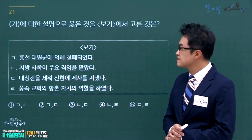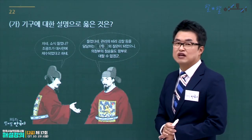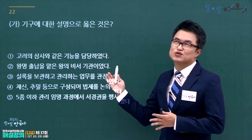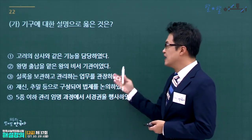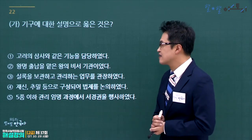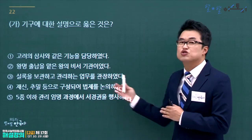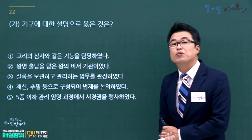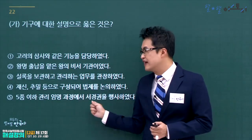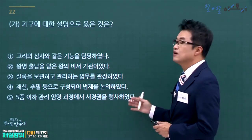조광조가 대사헌으로 있었던 기구는 사헌부입니다. 사헌부에 대한 설명으로 옳은 것을 고릅니다. 고려의 삼사는 회계 기능만 담당했고, 왕명출납은 승정원, 실록 보관은 춘추관, 재신·추밀이 법제를 논의한 것은 고려 도병마사입니다. 관리 임명 과정에서 서경권을 행사한 것이 사헌부와 사간원의 역할이므로 정답은 5번입니다.